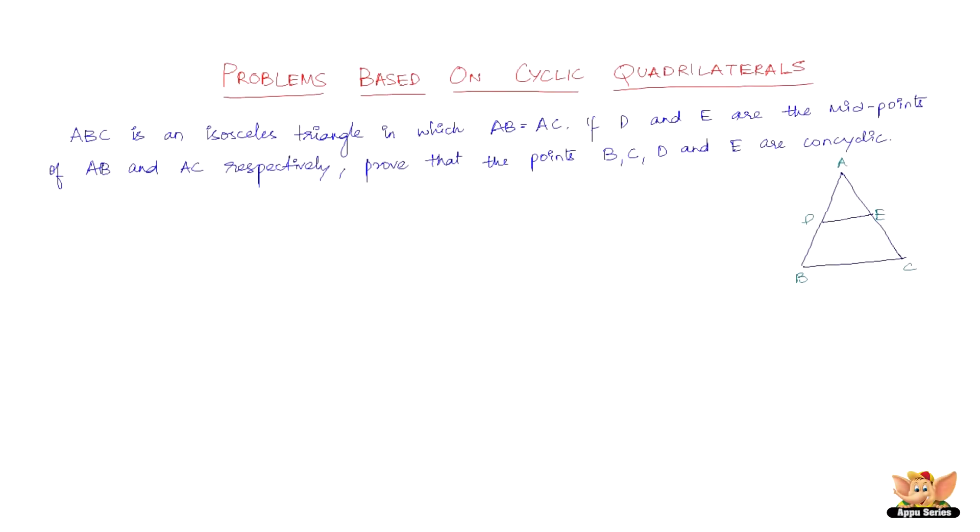Let us continue to solve problems based on cyclic quadrilaterals. ABC is an isosceles triangle in which AB equals AC. If D and E are the midpoints of AB and AC respectively, prove that the points B, C, D and E are concyclic.